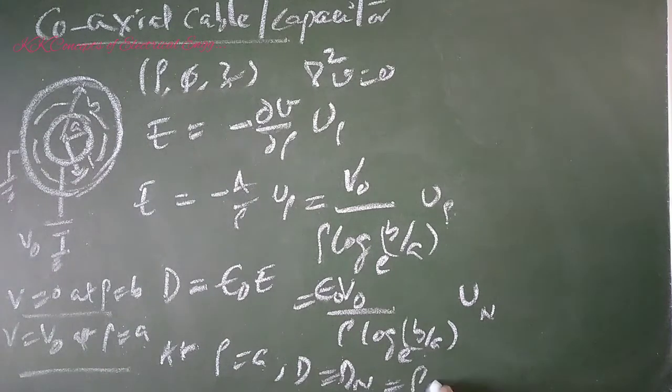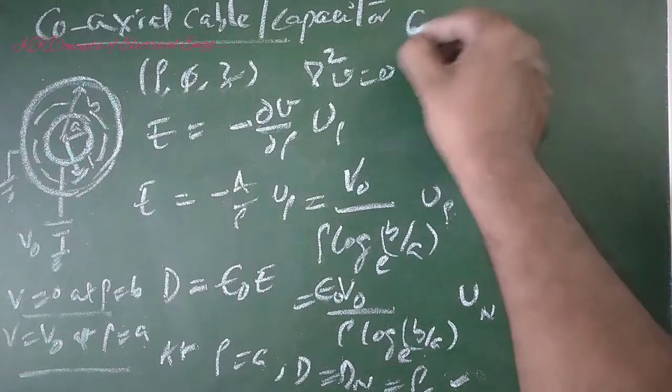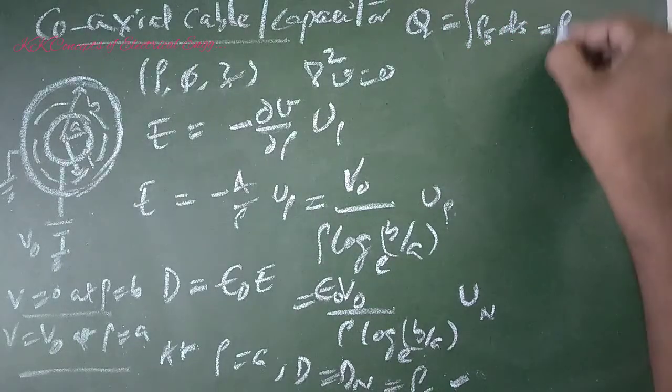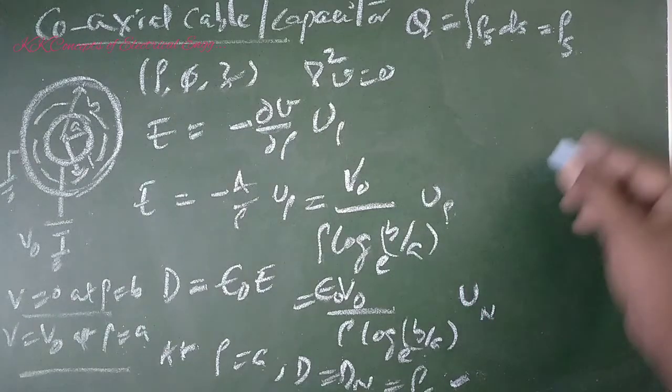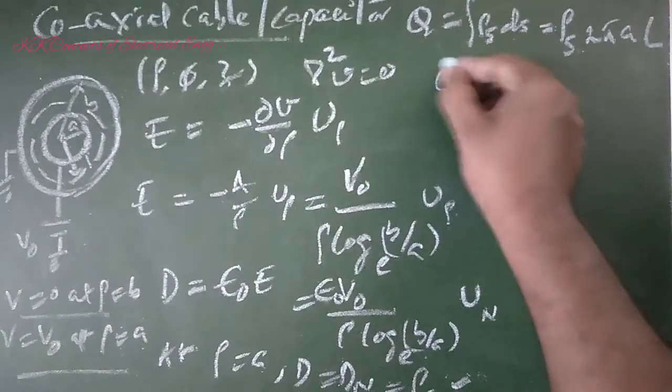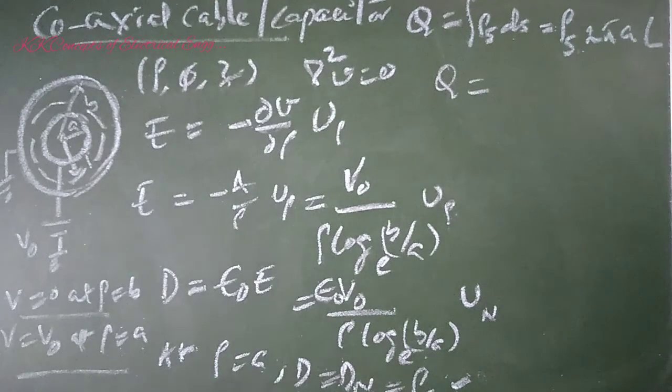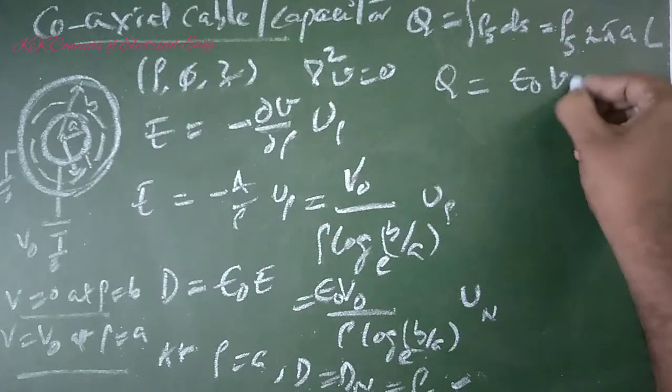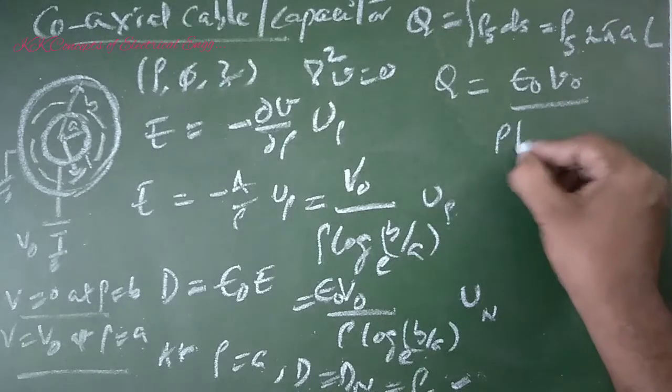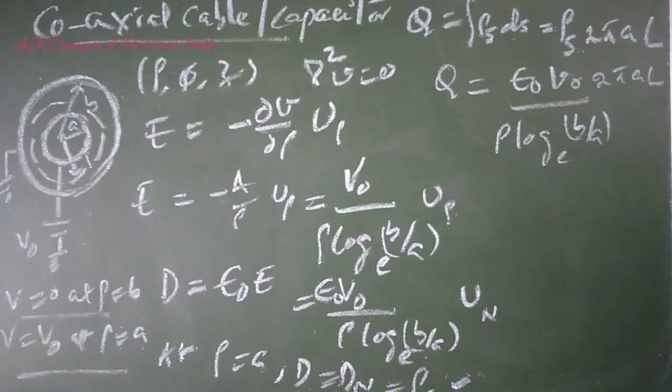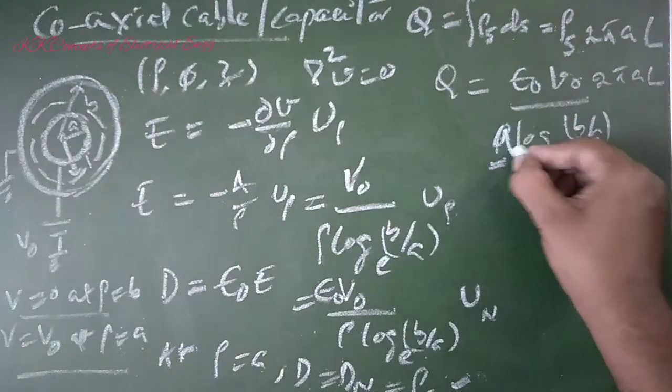Charge Q equals ∫ρ_s dS equals 2πAL, where L is the length of the conductor. ρ_s is the surface charge density, D_n equals D. So the value is ε₀V₀/(ρ log(B/A)) × 2πAL. Here ρ equals A, so A is substituted.